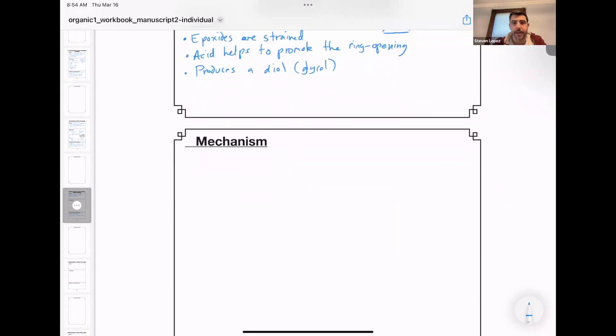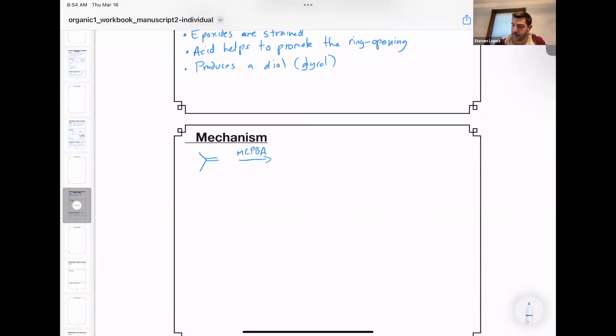Before we talk about the mechanism, let me just show you a potential synthesis of this epoxide compound. Suppose you started with an alkene and reacted this with MCPBA, a well-known epoxidizing agent. You end up with this compound here.